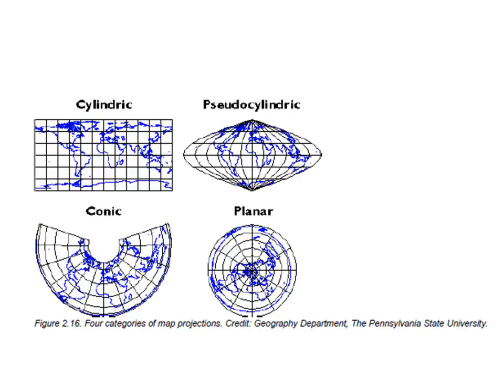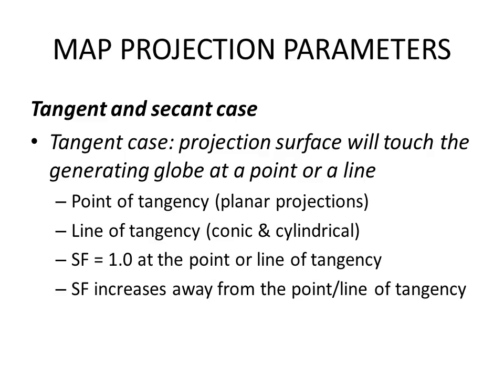Planar maps, we often see represented as polar maps because instead of having a line of tangency, they have a point of tangency. That point of tangency is going to be in the center of the planar map and it's where locations are accurate with the least amount of distortion.